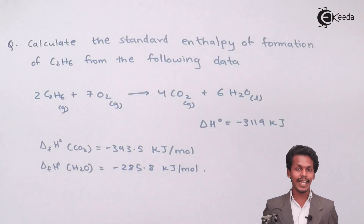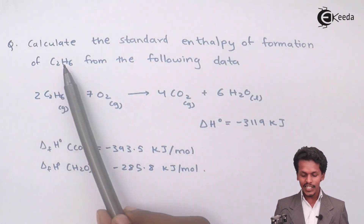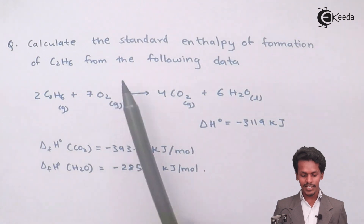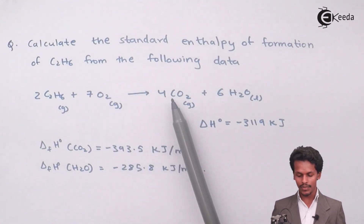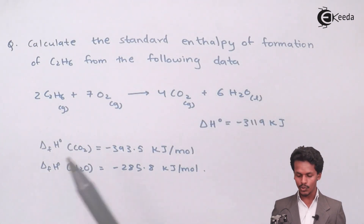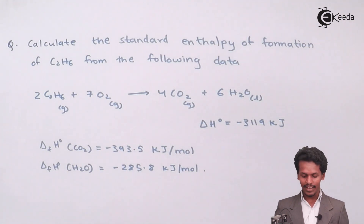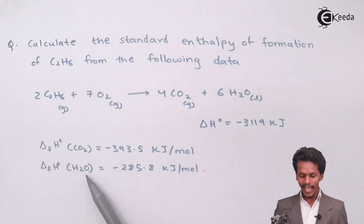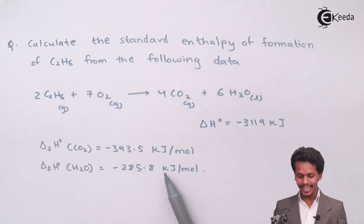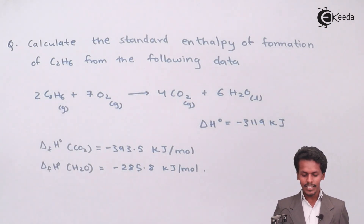So this is the reaction they have provided to us, and we have to calculate the standard enthalpy of formation of C2H6 from the following data. The reaction given is: 2 moles of C2H6 plus 7 moles of O2 gives 4 molecules of CO2 plus 6 moles of H2O. The overall heat of reaction is minus 3119 kJ, the heat of formation of CO2 is minus 393.5 kJ/mol, and the heat of formation of H2O is minus 285.8 kJ/mol. We have to calculate the heat of formation of C2H6.